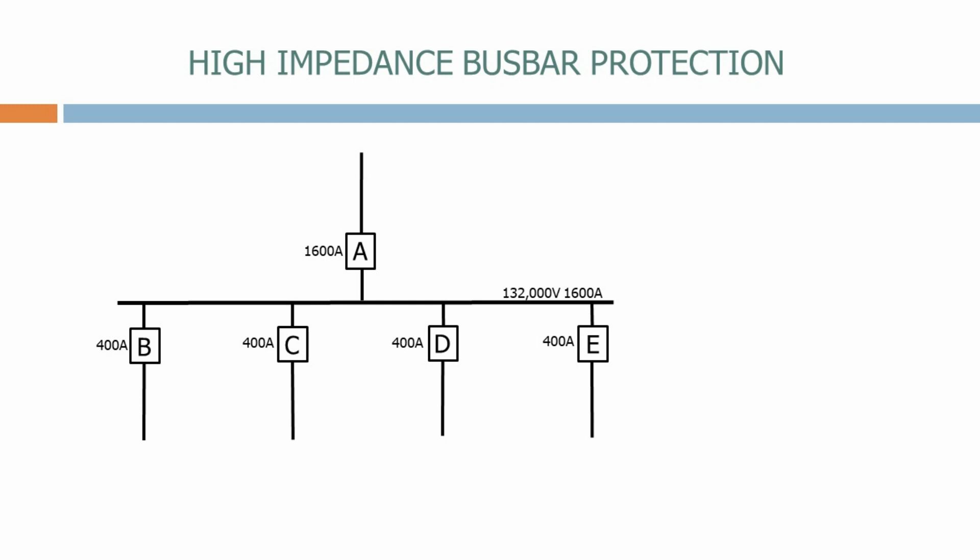Here we have a typical single busbar substation with a 1600 amp incomer feeding a busbar with four 400 amp feeders. To protect the busbar we need to position a current transformer on each current infeed. This forms the busbar protection zone.